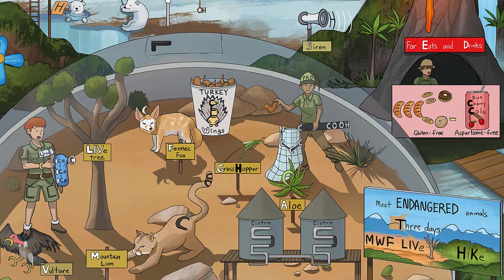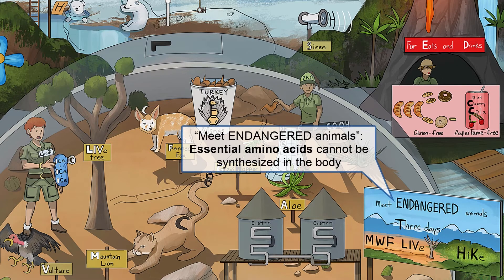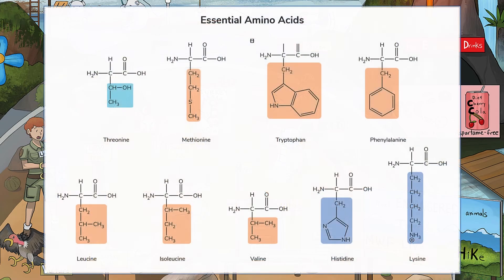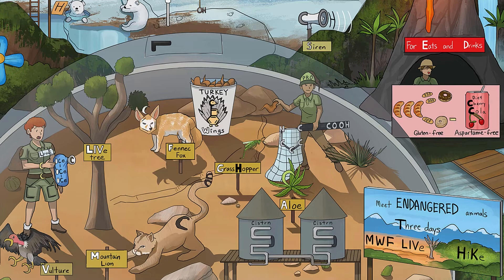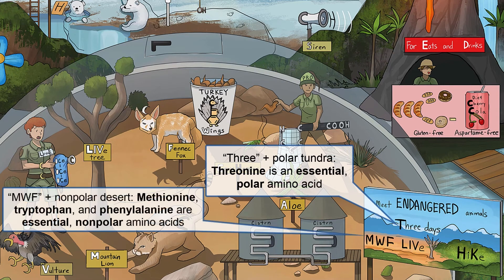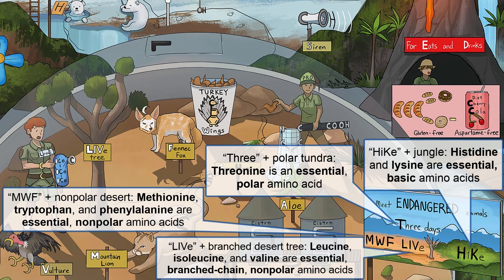Let's talk about the 9 essential amino acids that cannot be synthesized by the body. The Amino Animal Zoo allows visitors to meet endangered animals — the endangered animals are essential to existence. The essential amino acids are threonine, methionine, tryptophan, phenylalanine, leucine, isoleucine, valine, histidine, and lysine. Check out this mnemonic to help you remember them: for three whole blissful days, specifically Mondays, Wednesdays, and Fridays, go on a live hike to meet these endangered beauties.